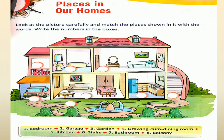Today we are learning about places in our home. Now we are doing some exercise. Look at the picture carefully and match the place shown in it with the words. Write the number in the box. First, number 1 is bedroom. Here we can see a photograph of a room — where is bedroom? Yes, this is a bedroom. Here we can write number 1. Everyone write with me — number 1 is a bedroom.